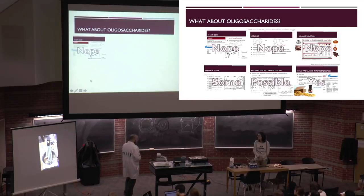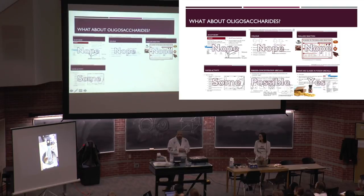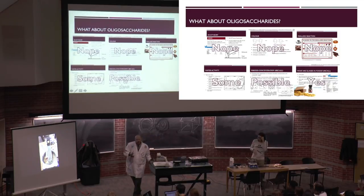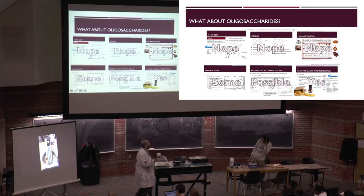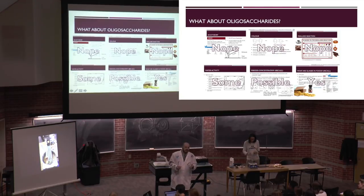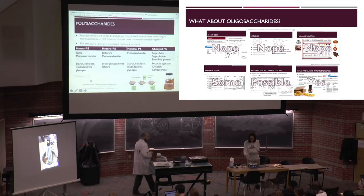Oligosaccharides don't really impart physical properties: they're not sweet so they don't provide flavor, they don't play a role in color or Maillard reaction, they have a minor role in water activity, they will freeze-concentrate but only slightly, and they do form glasses. The main interest in the food industry is using oligosaccharides as prebiotics or as energy sources to grow specific bacteria.